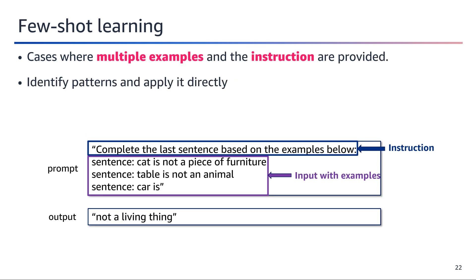Few-shot learning refers to cases where multiple examples and the instruction are provided in the prompt, allowing the model to identify patterns across the examples and apply them directly to the given task. For instance, with example sentences like 'cat is not a piece of furniture', 'table is not an animal', and 'car is...', the model correctly completes the pattern with 'not a living thing'. Few-shot learning is beneficial when multiple examples can provide useful context and guidance, enabling the model to effectively generalize from a small number of instances.